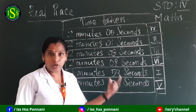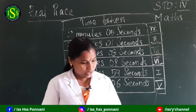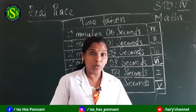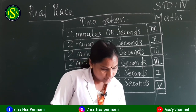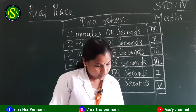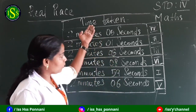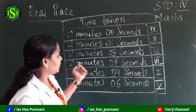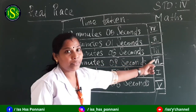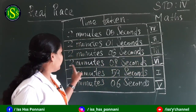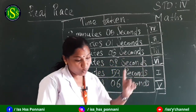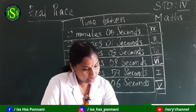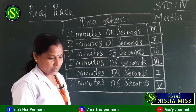The next question: who took the most time? The sixth runner took the most time. What is the time? 2 minutes 8 seconds. The sixth runner took the most time — 2 minutes 8 seconds.